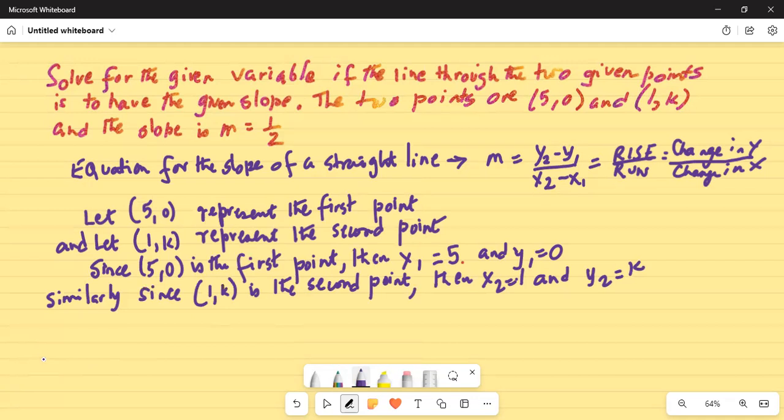Now, slope is given as half. M is equal to half, and that is equal to y2 minus y1. So y2 is k, y1 is 0, divided by x2 is 1 and x1 is 5.